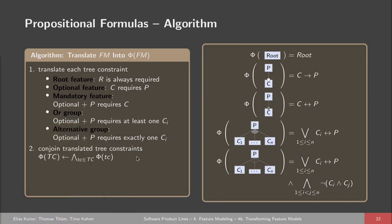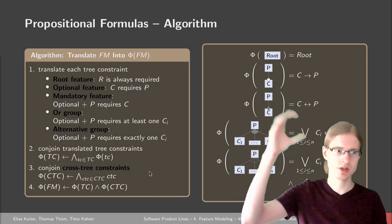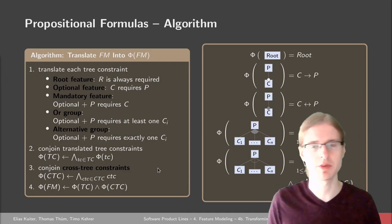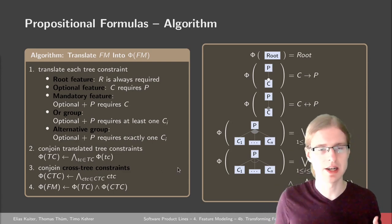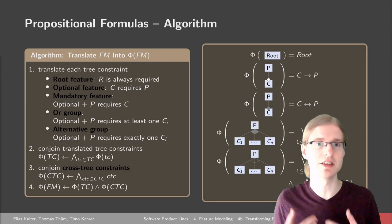Once we have all these constraints, we conjoin them together into a large conjunction — the first tree constraint, the second, third, and so on — and then also conjoin all the cross-tree constraints. This builds up a large set of rules which all have to be satisfied for a configuration to be valid in a feature model.